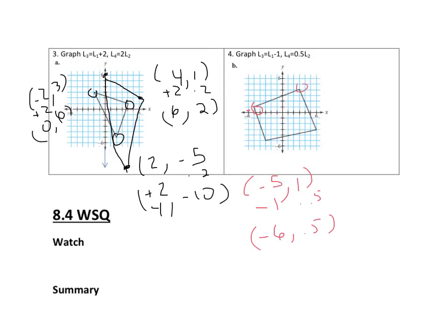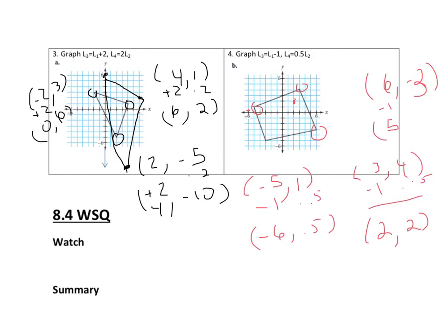Looking at the point at 3, 4: subtracting 1 gives me 2, and multiplying by 0.5 gives me 2, so this point moves to (2, 2). Then for the point at 6, negative 2 — or 2, negative 3: subtracting 1 gives me 5, and multiplying by 0.5 gives me negative 1.5. So this point moves to (5, negative 1.5).